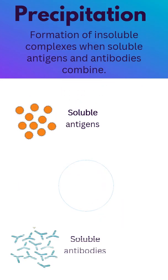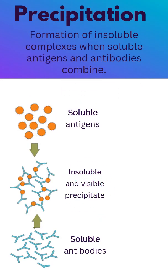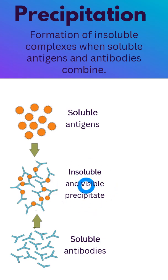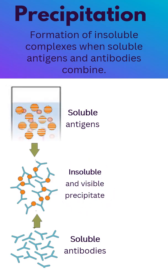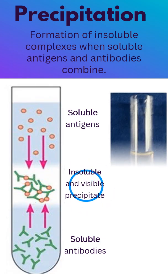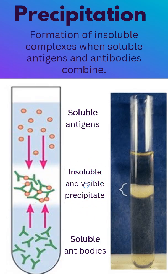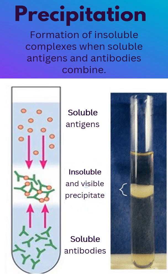Precipitation happens when soluble antigens and antibodies combine to form an insoluble complex. These antigens and antibodies are soluble because they are dissolved in body fluids or aqueous solutions, freely moving and capable of interacting in the solution.